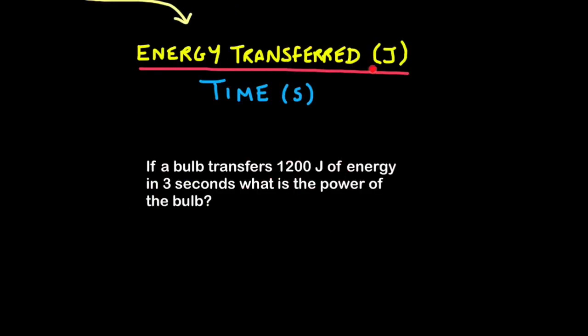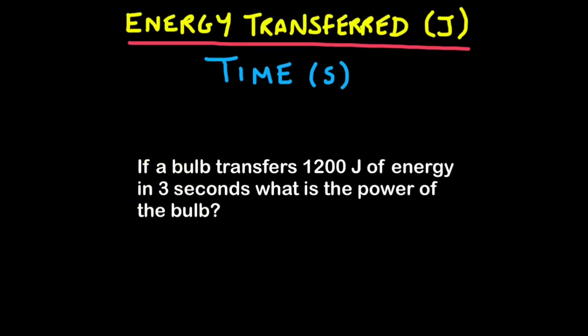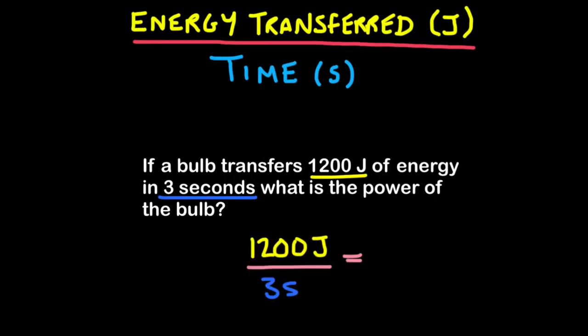The second method is simply energy transferred by an appliance measured in joules over time. That logically makes sense because power is joules per second, joules over time. Both these equations are literally saying the same thing, energy over time. Here's a typical question: if a bulb transfers 1200 joules of energy in three seconds what is the power of the bulb? So 1200 joules and time is in seconds so three seconds. So once again we just plug our figures into this formula so 1200 joules divided by three seconds will give you a power rating of 400 watts.